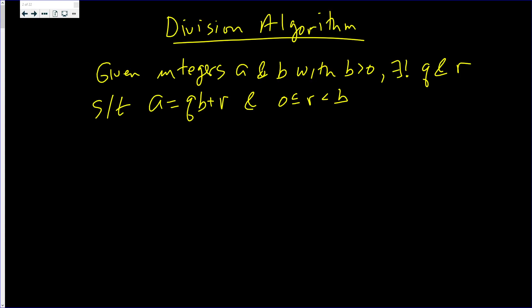In this video we're going to prove the division algorithm. It states that given two integers A and B where B is positive, there exists a unique Q and R such that A = QB + R, when R is greater than or equal to zero but less than B.